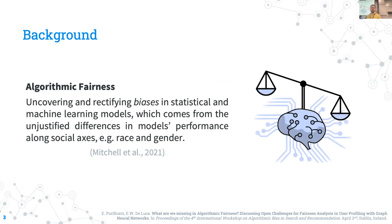Algorithmic fairness can be defined as the field for uncovering and rectifying biases in statistical and machine learning models, which come from the unjustified differences in models' performance along social axes, such as race or gender.